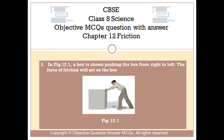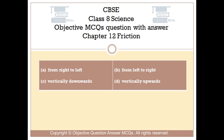Question number 2. In figure 12.1, a boy is shown pushing the box from right to left. The force of friction will act on the box. Option A: From right to left. Option B: From left to right. Option C: Vertically downwards. Option D: Vertically upwards.